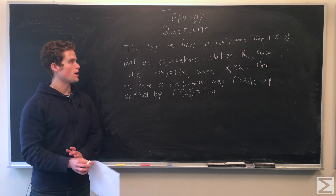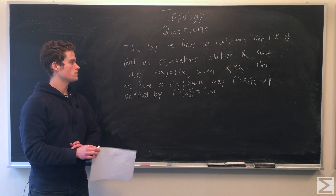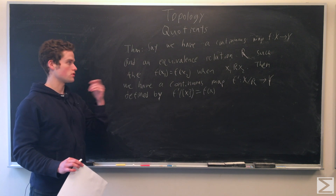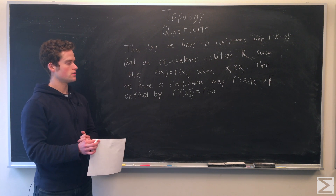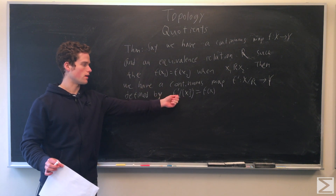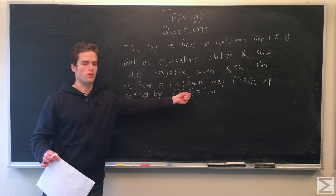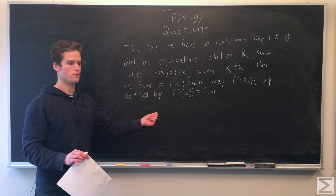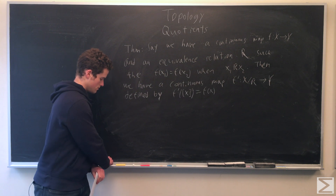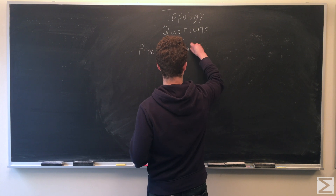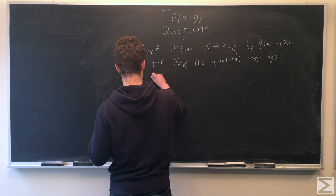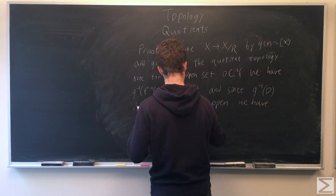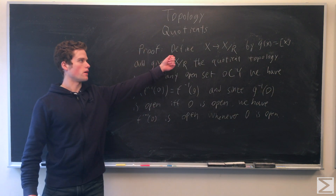So we can prove: if we have a continuous map f going from a space X to a space Y, and an equivalence relation such that x₁ is equivalent to x₂ whenever f(x₁) equals f(x₂), then we have a continuous map from X/R to Y defined by f-prime of the equivalence class of x equals f(x). We're going to give X/R the quotient topology from the map from X to X/R.